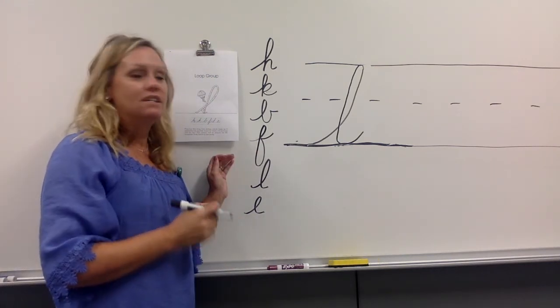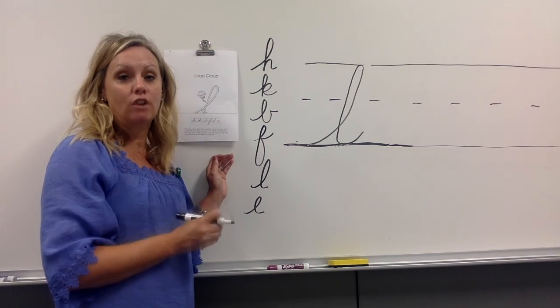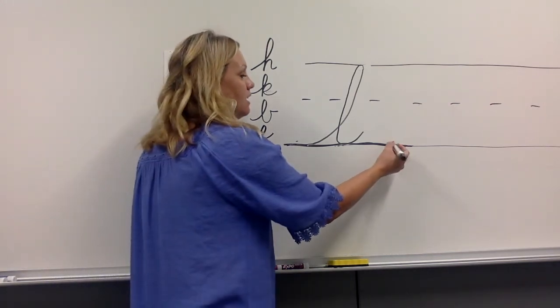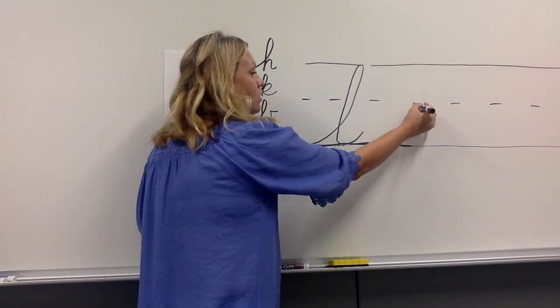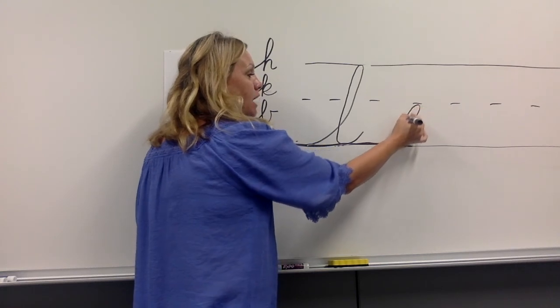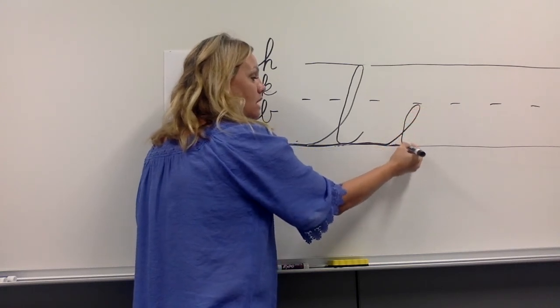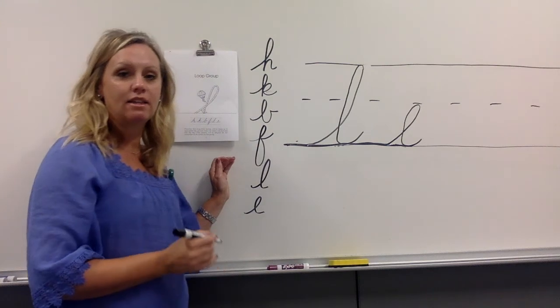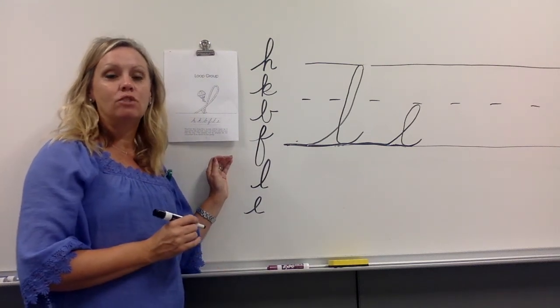E is the exact same motion but it is short. You're going to start at the bottom writing line, kite string up but only to the middle this time, backwards loop, pull down and release at the bottom. These are your loop group letters.